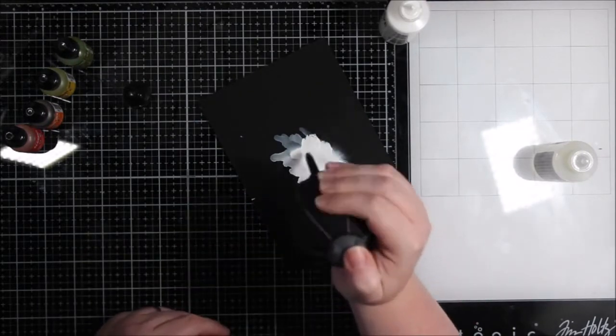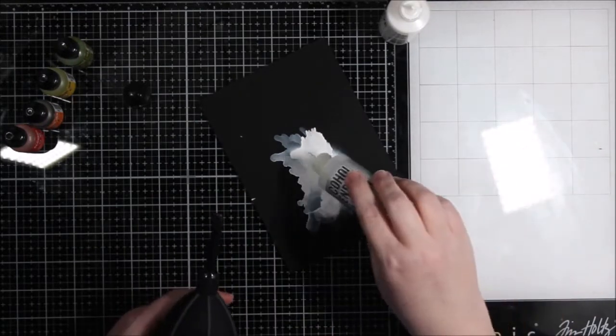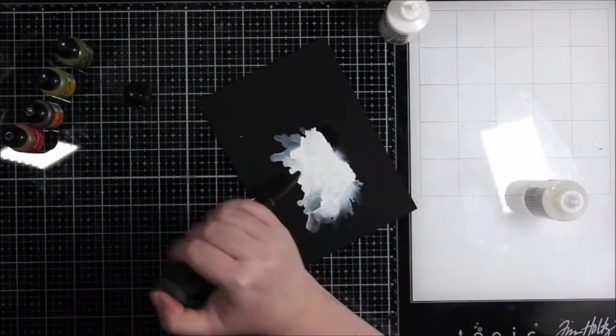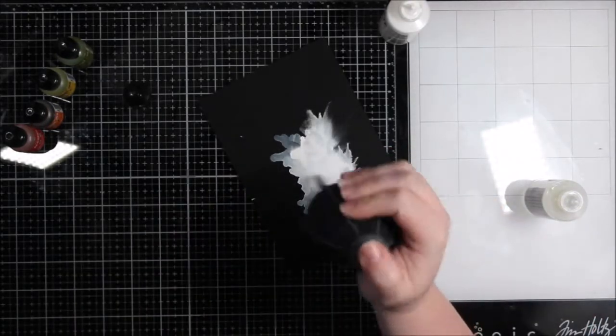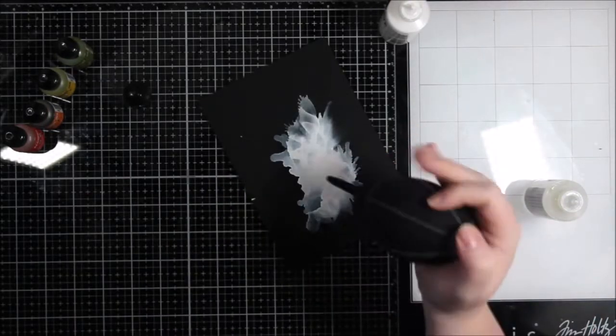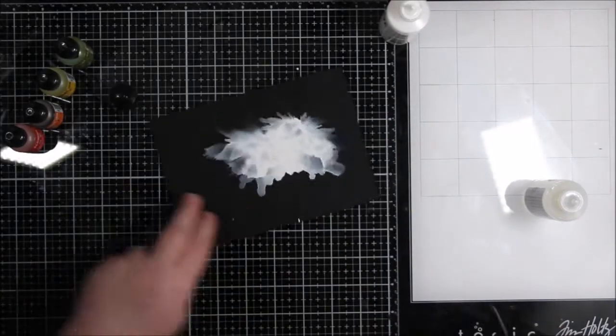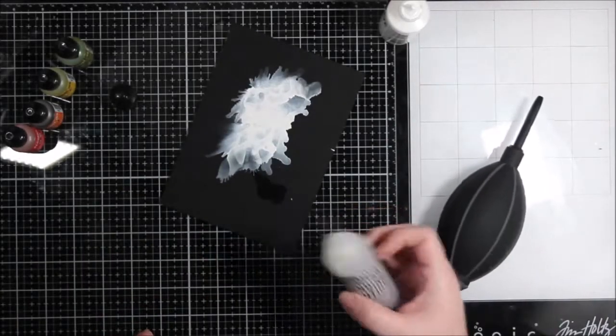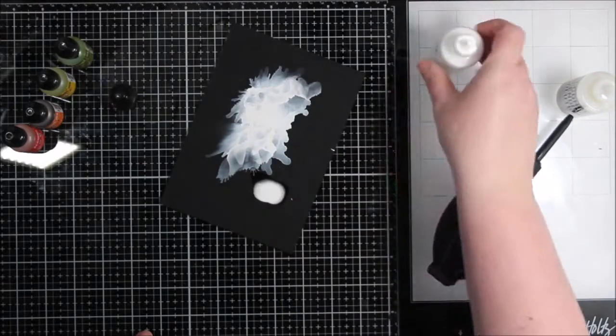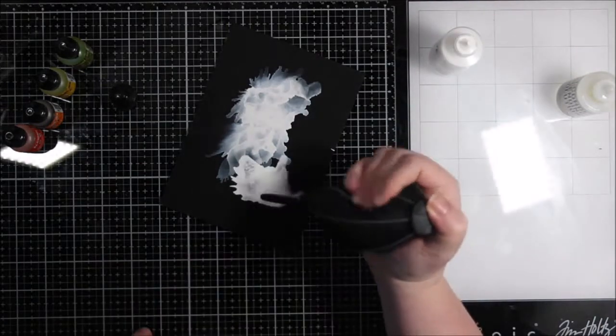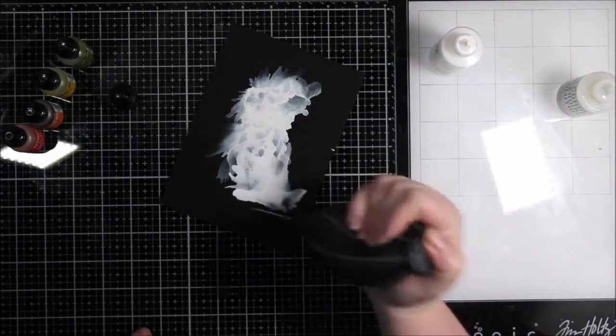Actually, I always thought it was probably like the plasticky Yupo paper, but boy, it doesn't feel like that. Definitely feels very different. But I know alcohol inks don't just work on this. You have to put something underneath them. So I decided to pull out the Snowcap Mixative. And this is also the first time I've played with this too.